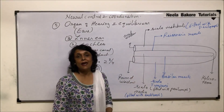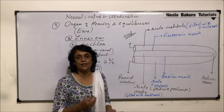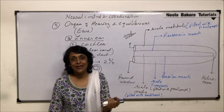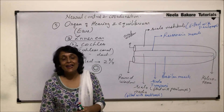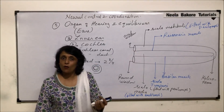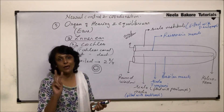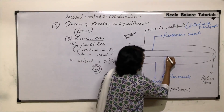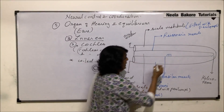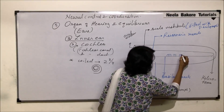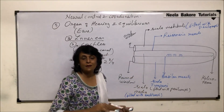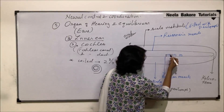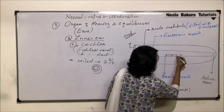On the basilar membrane are present the sensory cells. All these sensory cells are grouped together and that structure is known as the organ of Corti, named after the scientist Alphonso Corti. There are two types of cells: sensory cells and supporting cells. Among the supporting cells, there are taller supporting cells and some shorter ones as well.